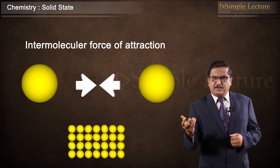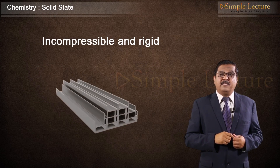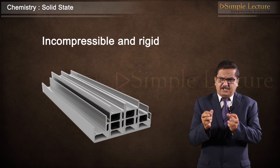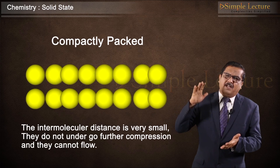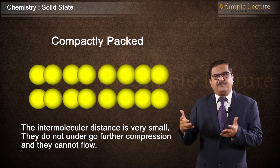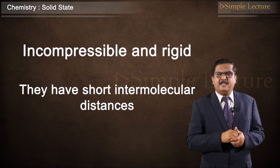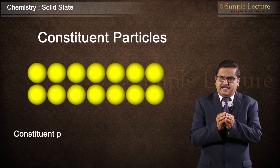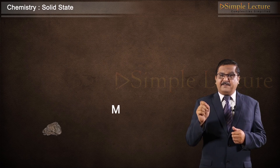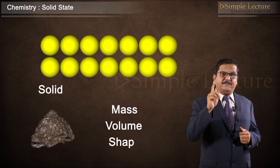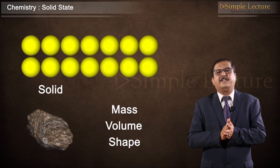The constituent particles may oscillate in their mean position but they do not come out of their location. Solids are incompressible and rigid — since the constituent particles are compactly packed, the intermolecular distance is very small, so they do not undergo further compression and cannot flow. They have short intermolecular distances, definite mass, definite volume, and definite shape, all due to the great force of interaction between the constituent particles.